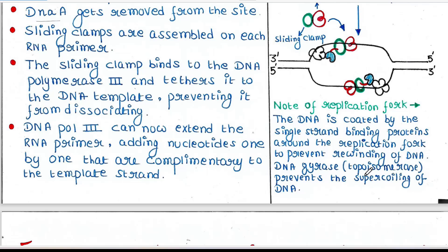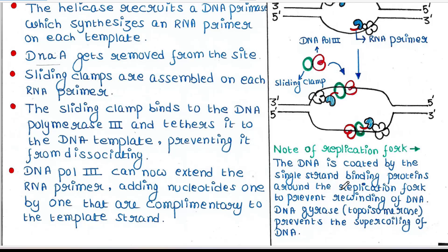DNA gyrase, which is a topoisomerase, prevents the supercoiling of DNA. Topoisomerases are enzymes that release the tension in DNA strands during DNA replication and make them relaxed.